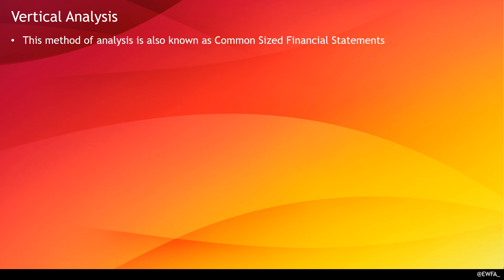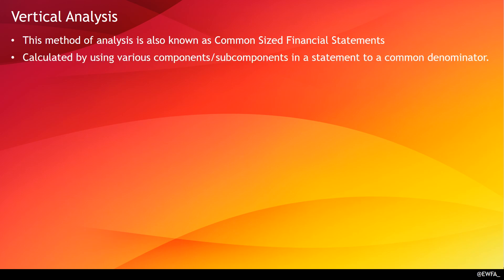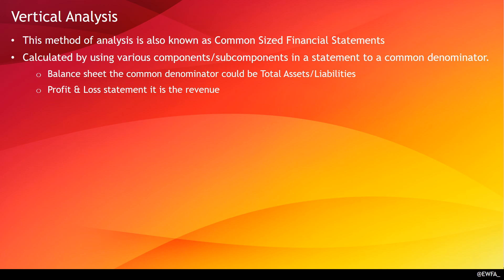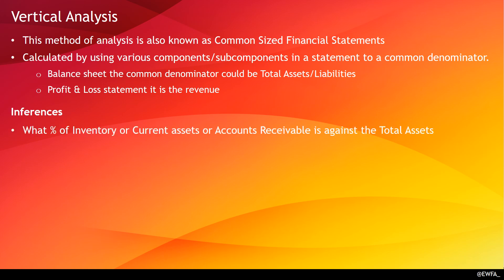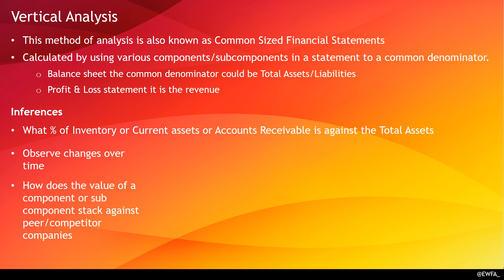Vertical analysis, also called common size financial statements, calculates various components as a percentage of a common denominator. For the balance sheet, the common denominator could be total assets or total liabilities; for the income statement, it could be revenue. This allows you to see, for instance, what percentage of total assets is inventory, current assets, or accounts receivable. With multiple years of data, you can see how a particular component behaves over time and compare it against competitor companies — for example, your company might have 20% inventory against total assets while a competitor has only 5%.